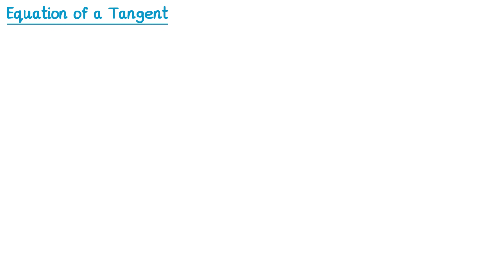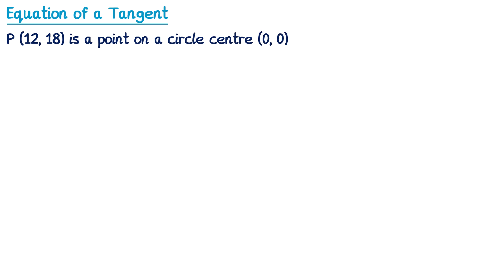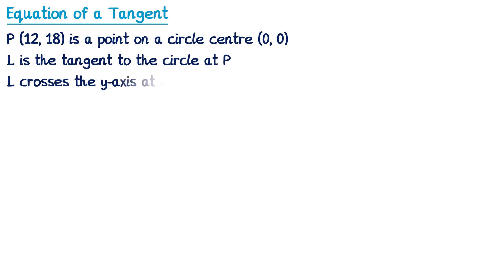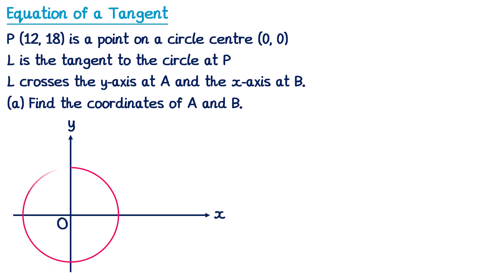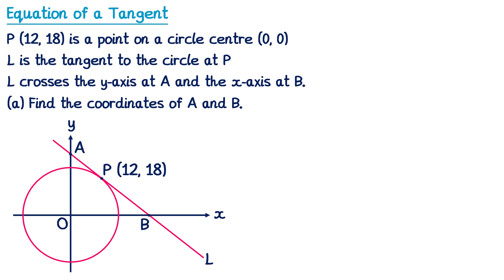Now we're going to have a look at one final question that has multiple parts. P is the point (12, 18) on a circle centred at (0, 0). L is the tangent to the circle at P. L crosses the Y axis at A and the X axis at B, and we need to find the coordinates of A and B. There's no diagram given — if you do AQA they tend to draw one for you, but otherwise I'd recommend sketching one yourself. So we have a circle centred at the origin, P on the circle at (12, 18), and the tangent L at that point crossing the Y axis at A and the X axis at B. We're going to find the equation of the tangent first, starting with the line OP.